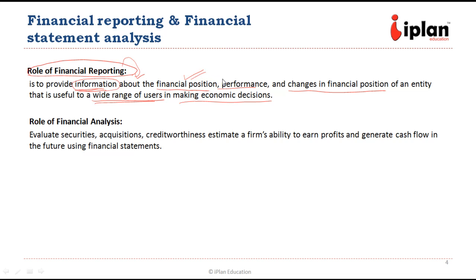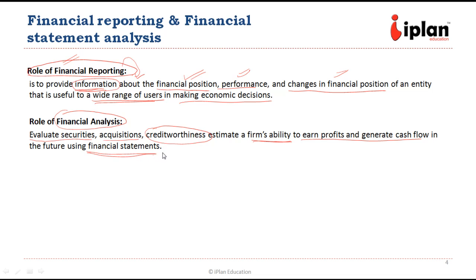This information could be related to the financial position of the company — what assets or liabilities the company has, what has been the performance in a previous period, what is the expected performance, and if there is any significant change in the financial position of the entity. If we look at financial analysis, it is the second part, in which we evaluate securities, acquisitions, or the creditworthiness of the company. We evaluate a firm's ability to earn profits and generate cash flows in the future using financial statements.